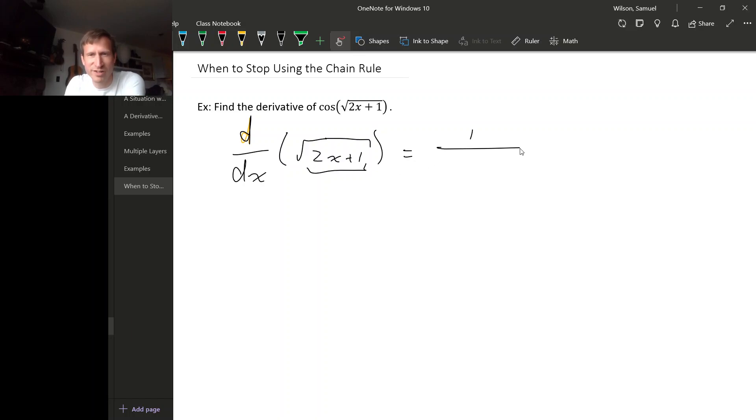so derivative of square root is 1 over 2 square root, and so put the inside of it in there, and then multiply by the derivative of 2x plus 1, which is 2